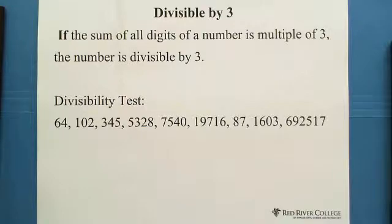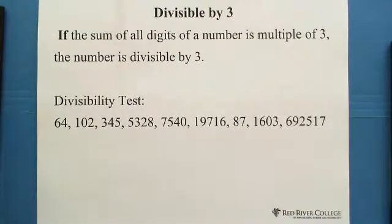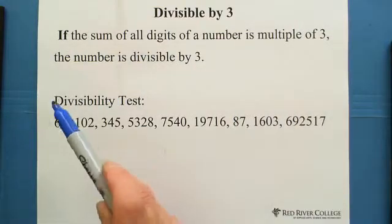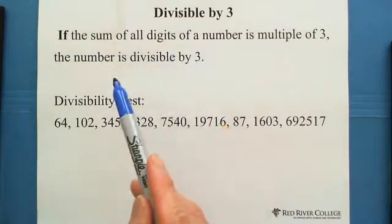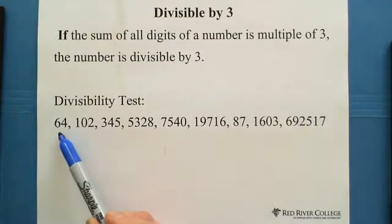Let's look at some examples of the divisibility test. For example: 64, 102, 345 — which one is divisible by 3? By using the divisibility test by 3 rule, we find the sum of all digits. For 64: 6 plus 4 equals 10. 10 is not divisible by 3, so 64 is not divisible by 3.